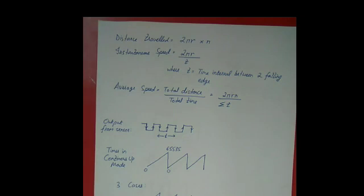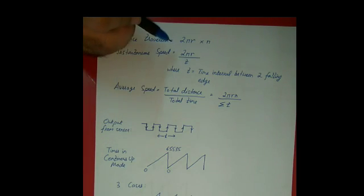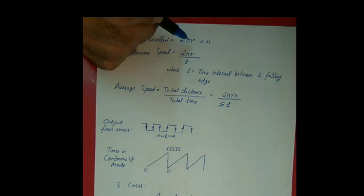So let's take a look at how our bicycle computer actually works. The distance travelled by the cycle would be equal to the distance travelled by the wheel of the cycle in one rotation into the number of rotations the wheel undergoes. So the distance travelled would be 2πr × n, where r is the radius of the wheel of the cycle and n is the number of times the wheel rotates.